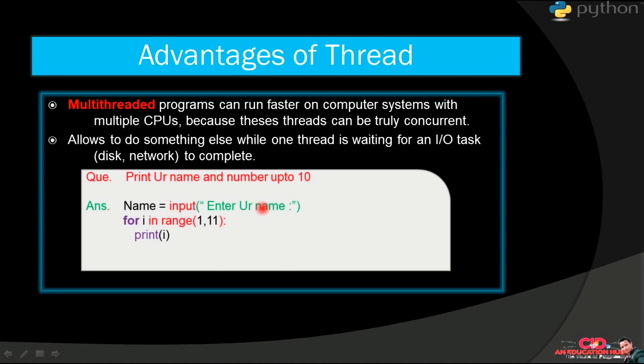It allows us to do something else when one thread is waiting for some input/output task. Suppose you have given a question to print your name and number up to 10. Then what will be your answer? Your answer may be like this: name equals input enter your name, and for i in range 1 to 11 print i. Then suppose you are here in this line and you are taking some time to type your name. Then processor is free to do something else.